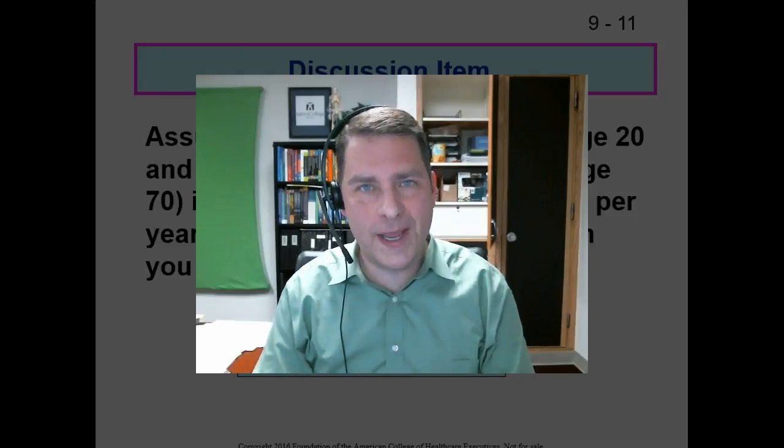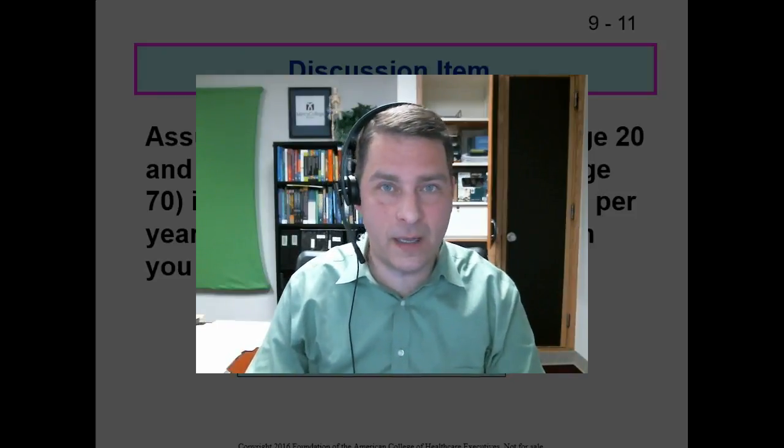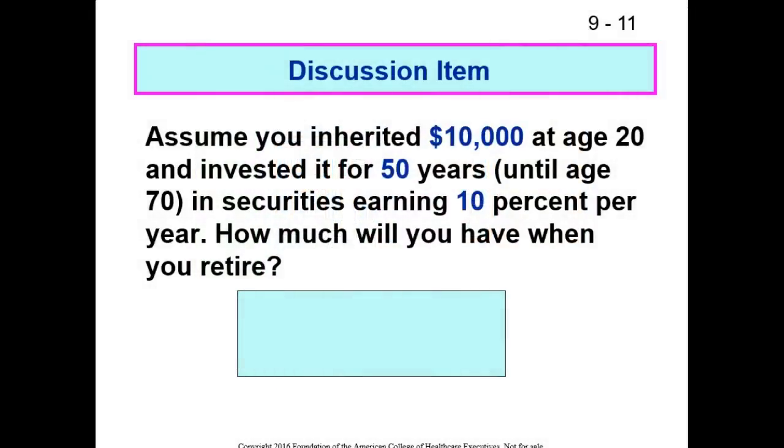Let's remove my picture off of here and reveal the question. Assume you inherited $10,000 at age 20 and invested it for 50 years until age 70 in securities earning 10 percent per year. Securities are stocks. Yeah, I hope that's guaranteed, right? Nothing's guaranteed in the stock market. How much will you have when you retire? Well, remember that longhand method where you can calculate it using exponents? You could do it using that, but we're gonna use that calculator on the website.